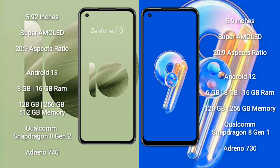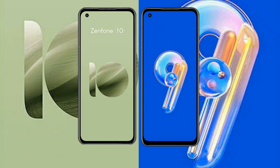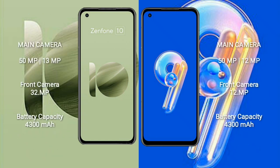The Zenfone 10 features a Qualcomm Snapdragon 8 Gen 2 processor with Adreno 740 GPU. The Asus Zenfone 9 comes with 6GB, 8GB, or 16GB RAM and 128GB or 256GB internal storage, powered by a Qualcomm Snapdragon 8 Gen 1 processor with Adreno 730 GPU.